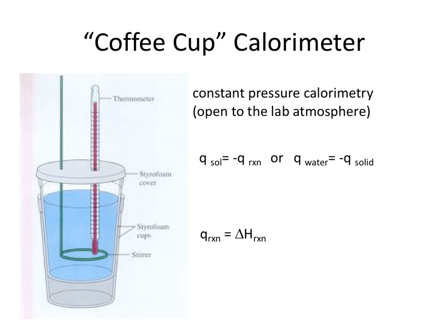The purpose of the coffee cup calorimeter is to allow you to analyze the surroundings. The thermometer, the cups, and the liquid the reaction sits in are all surroundings. We obtain information about the surroundings: temperature, volume, and subsequent mass of the liquid. If we know what the liquid is, we know the specific heat capacity, and we can calculate the Q of the solution. We measure the surroundings directly, and because energy is neither created nor destroyed — just transferred — we can use these relationships to figure out information about our system.